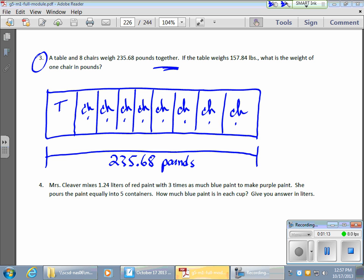Now the weight of everything combined, once again, 235.68. If the table weighs 157.84 pounds, here we go, I'm going to plug that in. By the T over here, I have 157.84 LBS, which means pounds.